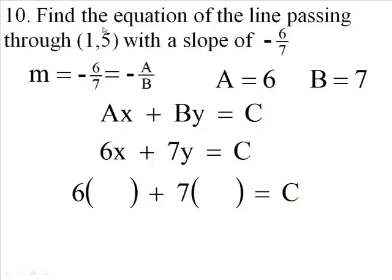Take x and write 1. So we have 6 times 1. We have 7 times the y value, which we said was 5. Now that's going to help me because 6 times 1 is 6, and remember we're determining what C is here. 6 times 1 is 6, 7 times 5 is 35.